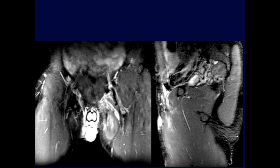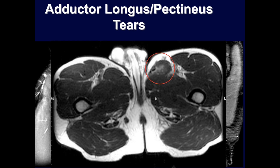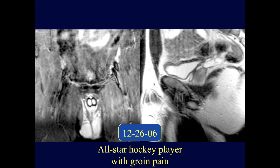In the left adductor longus, there is significant fluid within the muscle, consistent with a grade two or possibly grade one tear. Scrolling through images the tendinous attachment appears intact. Without a large focal collection visible, this is likely a grade one partial tear.